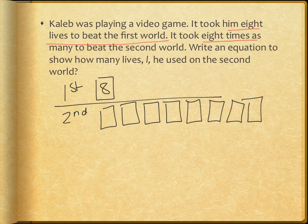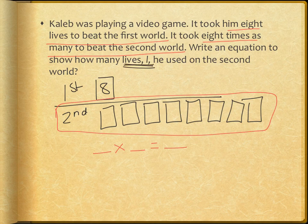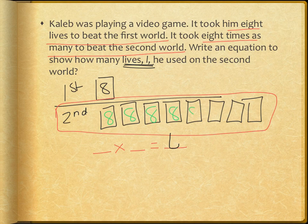It then tells me that it took him eight times as many to beat the second world. So for my second, I show eight empty boxes. I need an equation to show how many lives he used in the second world. Since this line represents my second world, my equation is going to be based on this line. Something times something equals something. Here, I'm looking for the answer — I don't have my product. That's how many lives he used on this world; the variable L is going to be my answer. I know that each box stands for eight, since it took him eight lives to beat the first world. So one of my factors is the number eight.